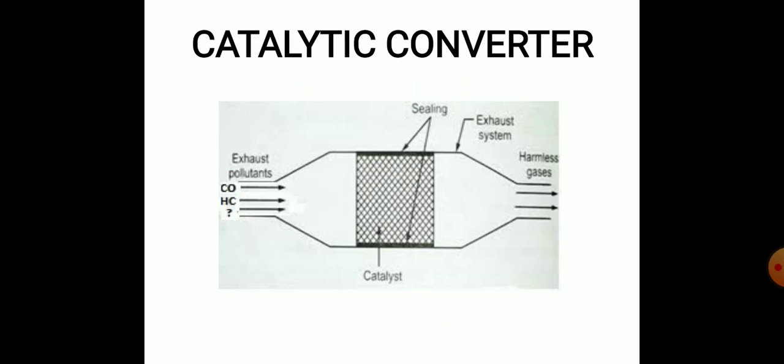To reduce the pollution, we are using three-way catalytic converter. Three-way catalytic converter is a device in which harmful gas is converted into harmless gas. Here catalytic converter consists of two catalysts: one is oxidation catalyst, another one is reduction catalyst.